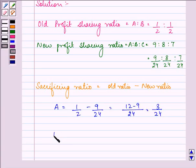And for B, it is 1/2 minus 8/24 that is 12 minus 8 by 24 that is 4 by 24.